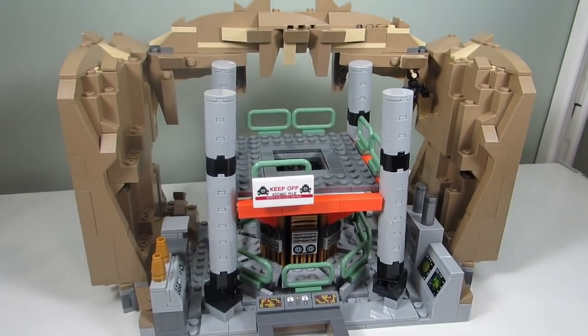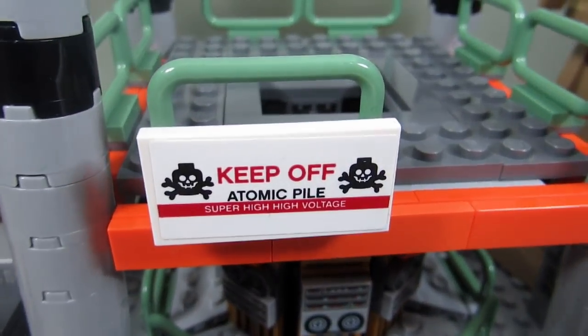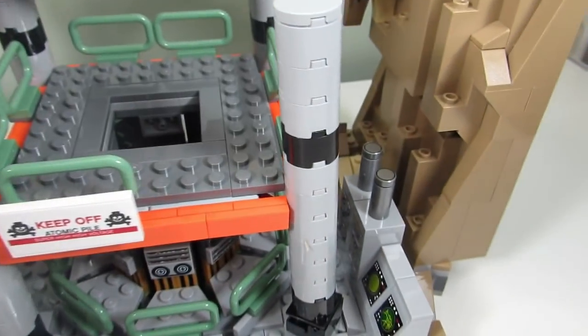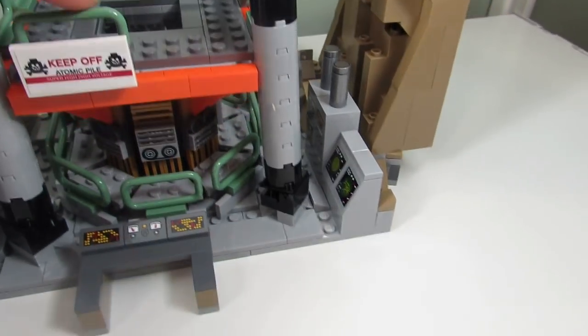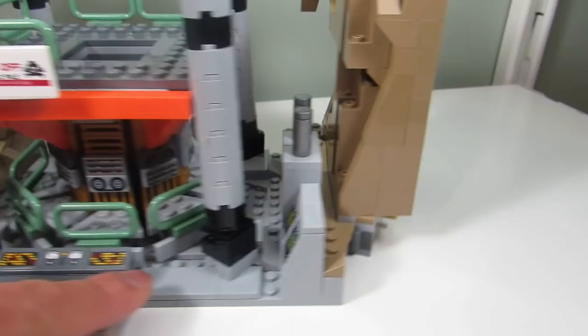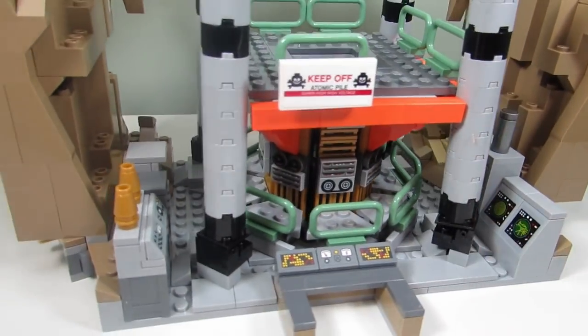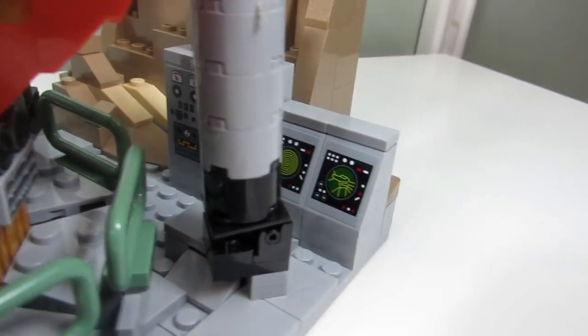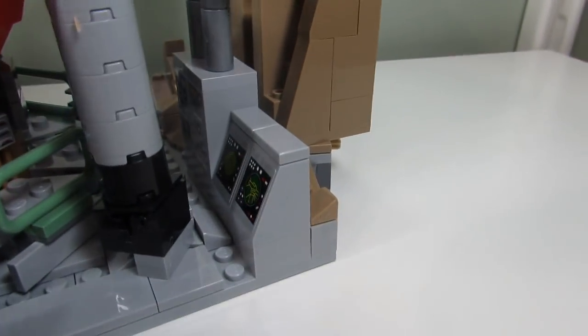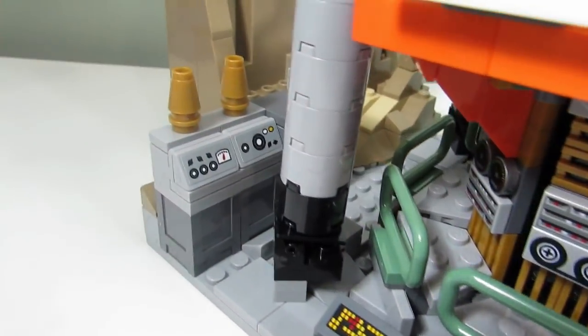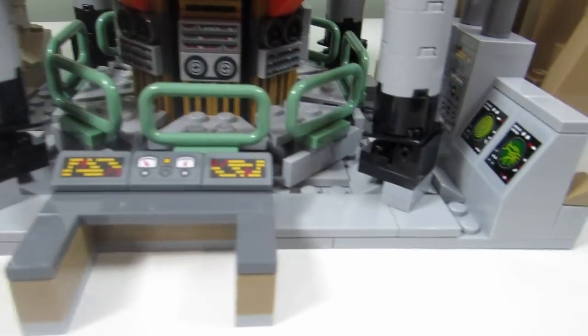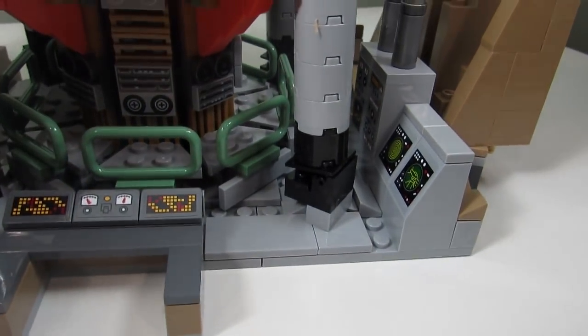All right this is the middle piece now and this is the control center. We have a sticker here that says keep off atomic pile, super high voltage. And so I like the sand green little gates here which are nice. We got the orange and sand green, can't remember if that's the same colors from the TV show but it's a nice touch. We have a lot of machines here with stickers and these can just come off but I won't take them off. And same thing on this side, very tight squeeze but I guess that's how they designed it.